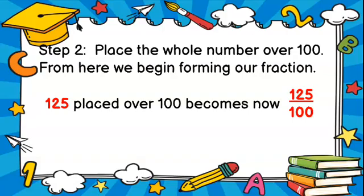Step 2: place the whole number over 100. From here we begin forming our fraction. So 125 placed over 100 becomes 125 over 100.